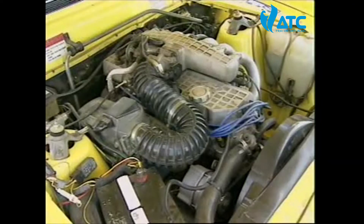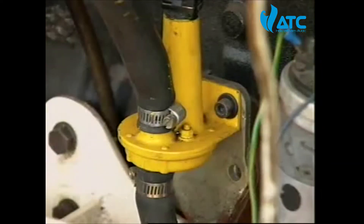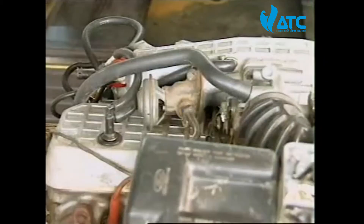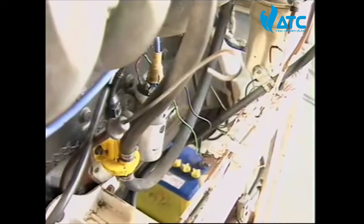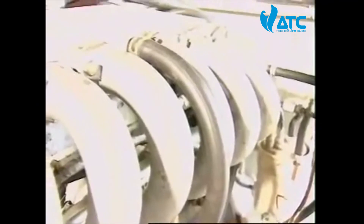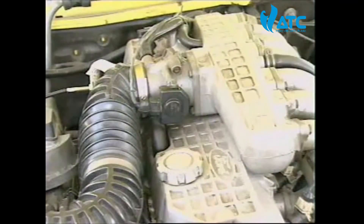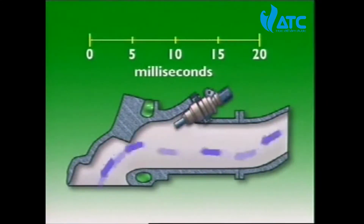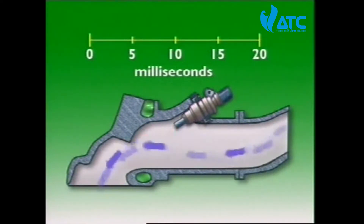The extra air needed for a cold engine can come from an auxiliary air device. This one has a connecting hose from the intake air side to its controlling passageway and a return hose to the plenum chamber. It bypasses the throttle plate when in operation to provide the extra air. The control unit reacts to this additional air by metering additional fuel, making more air-fuel mixture available during the warm-up period.